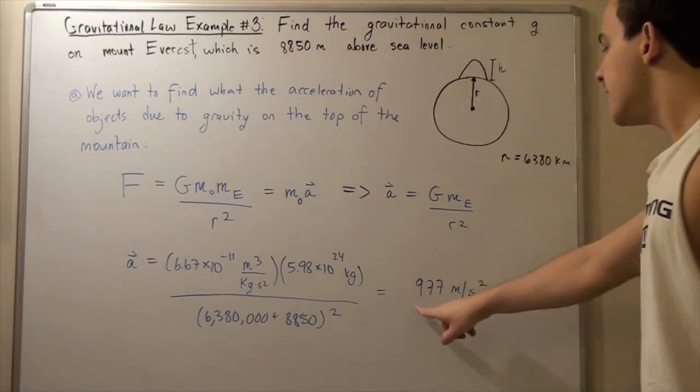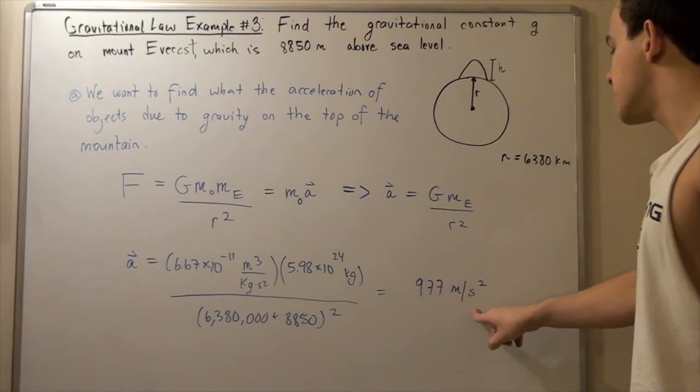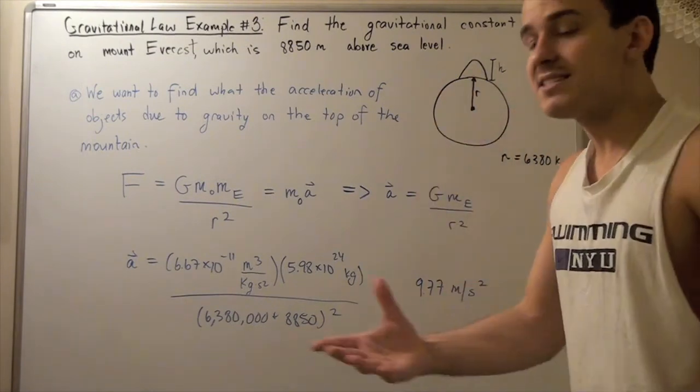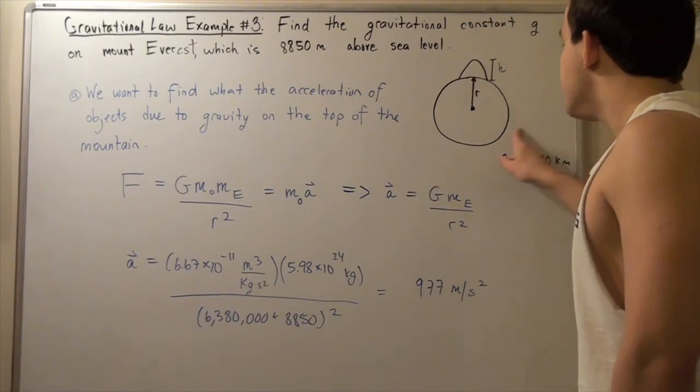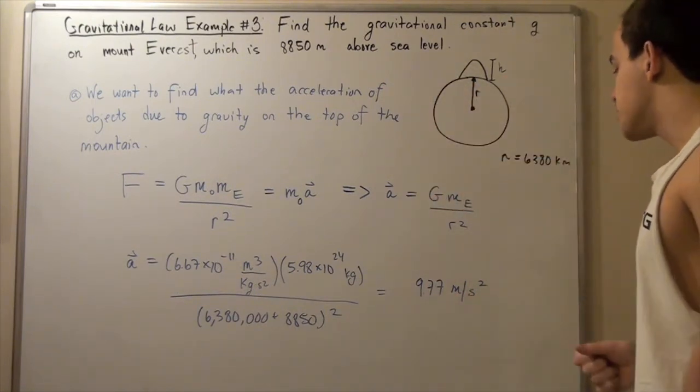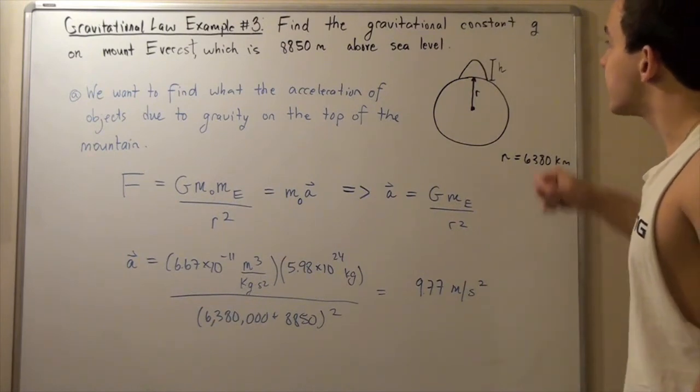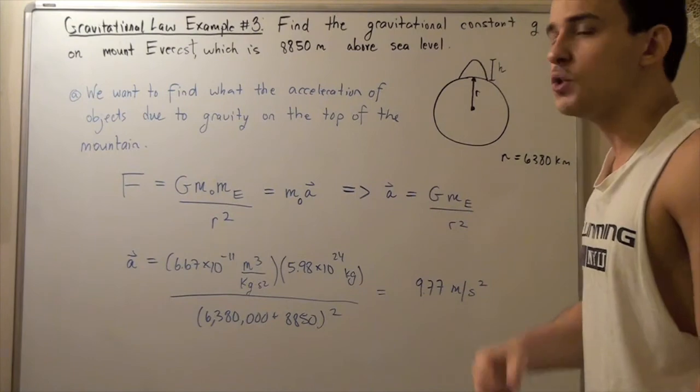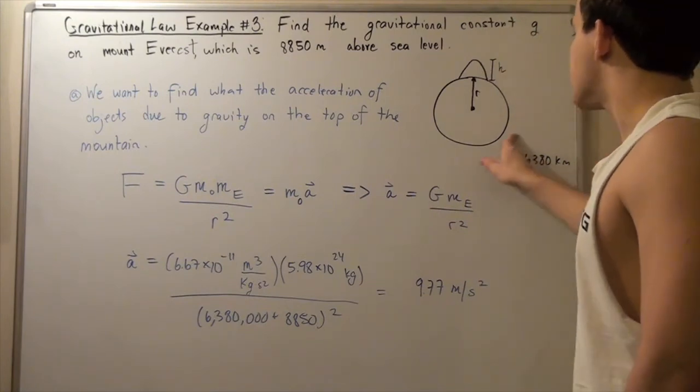This amount is less than what we see g to be on the surface of the Earth, which is 9.81 meters per second squared. So objects on top of this mountain accelerate with less magnitude than they do on the surface of the Earth.